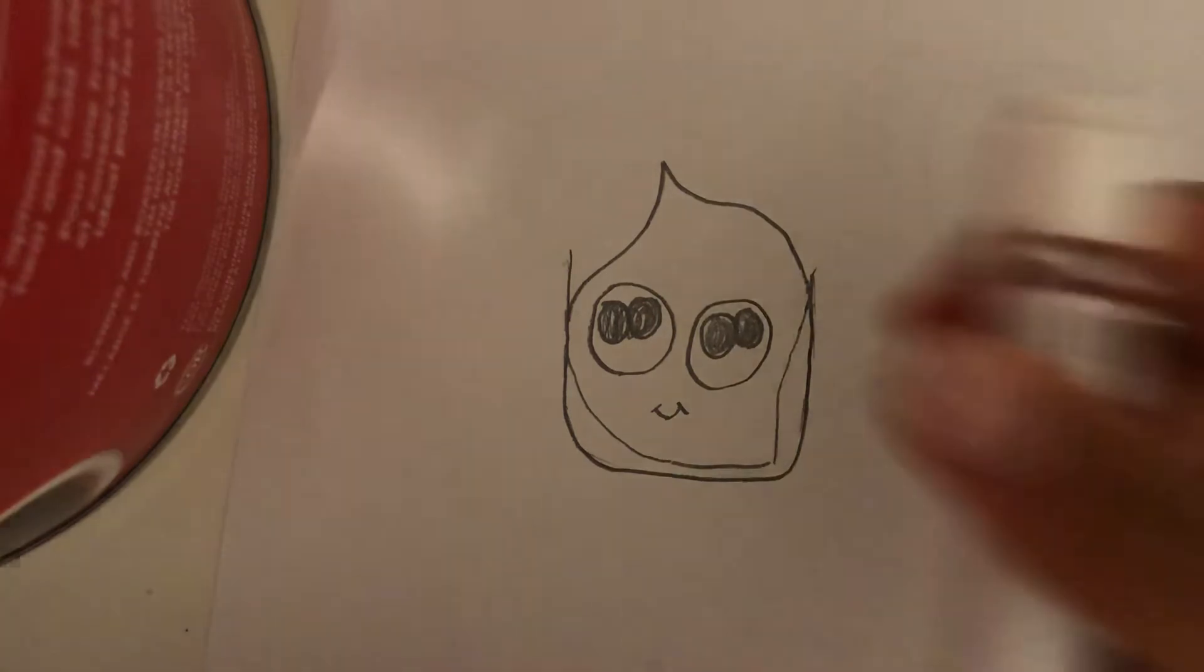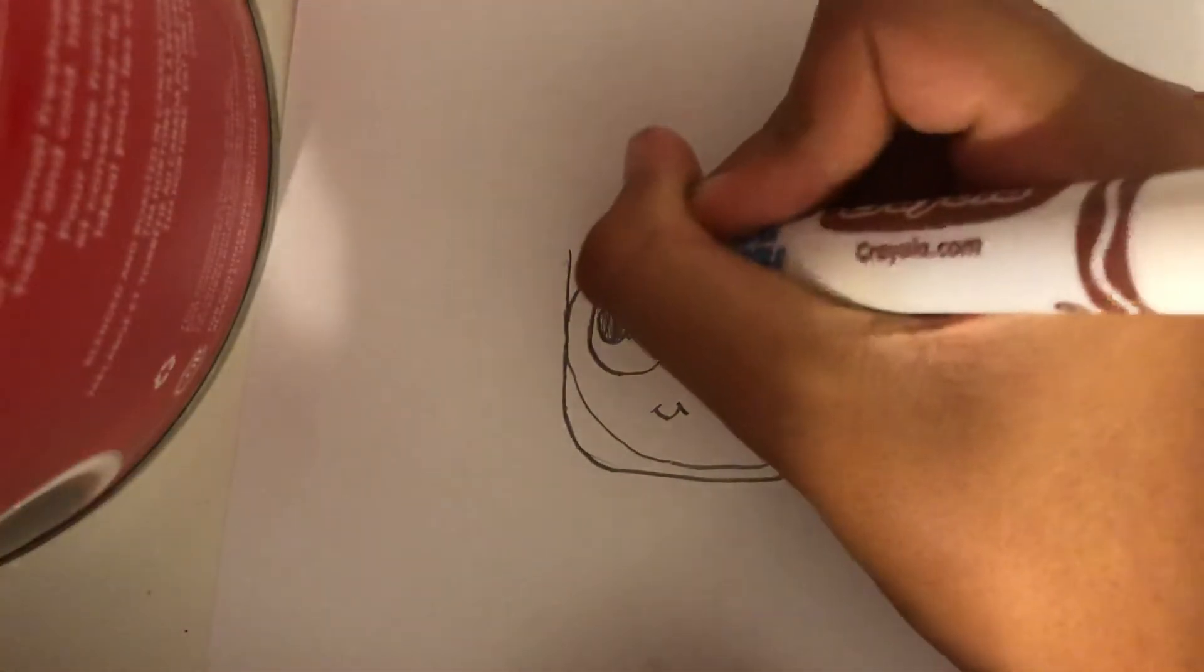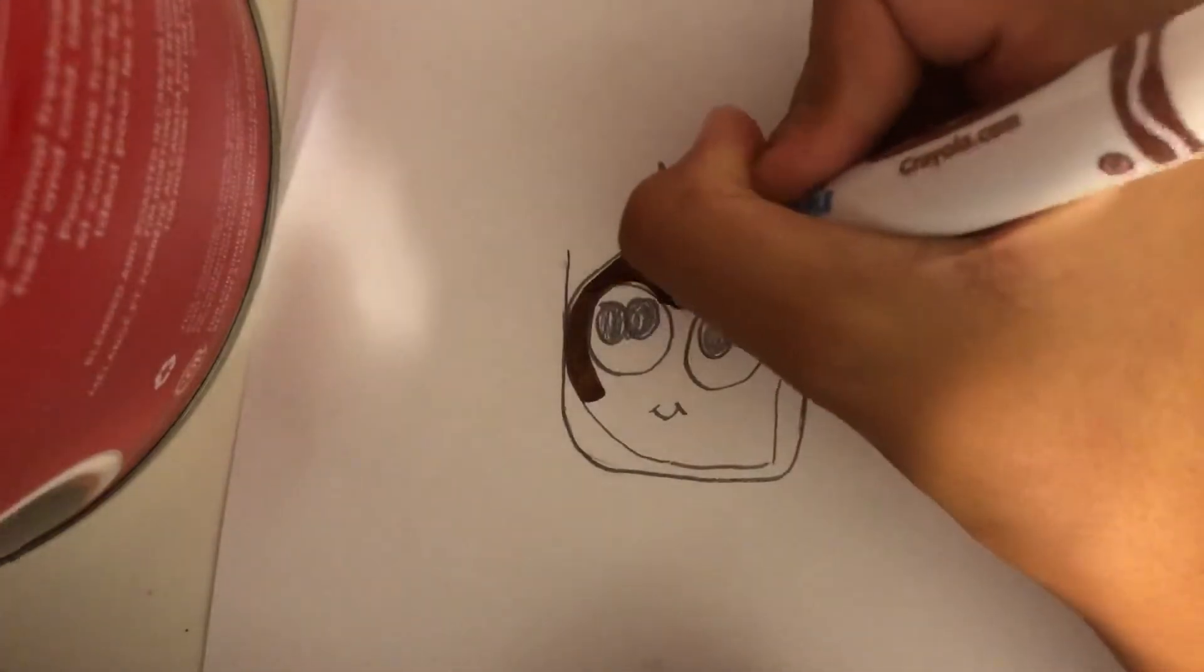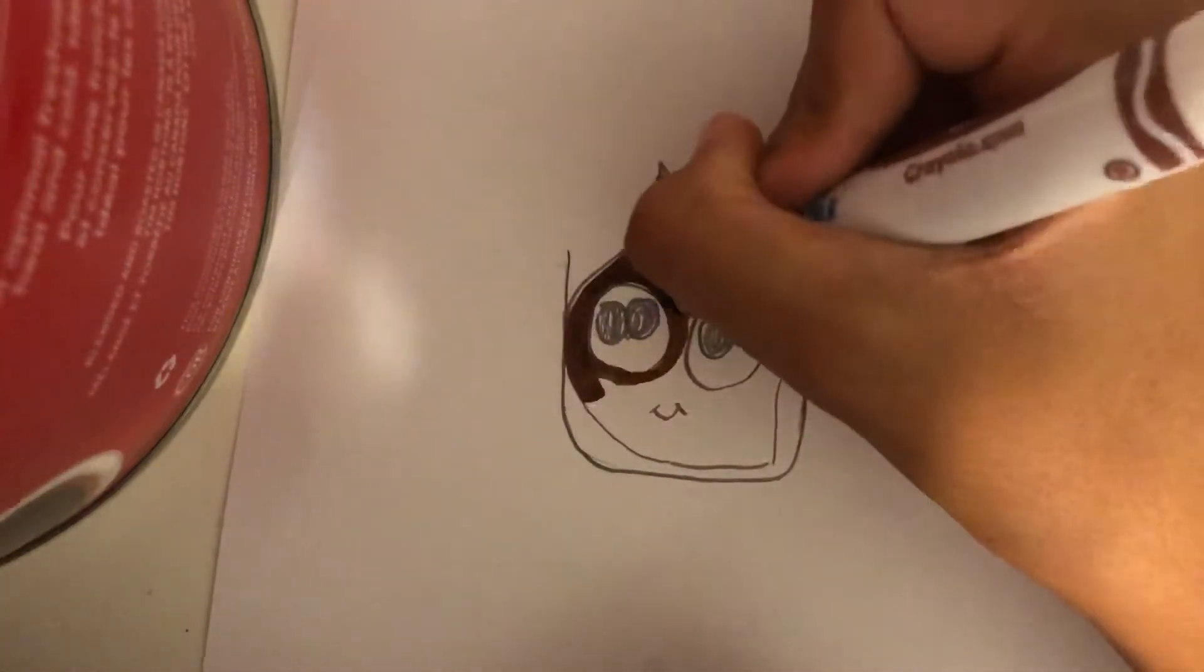Then you're ready to color. You shade in everything brown, with the marker, pretty dark because he's going to be chocolate pudding.